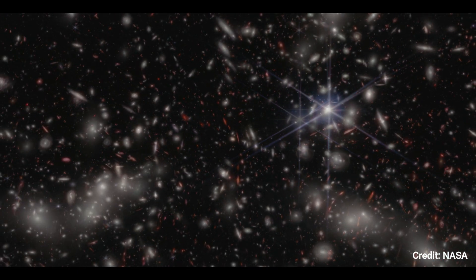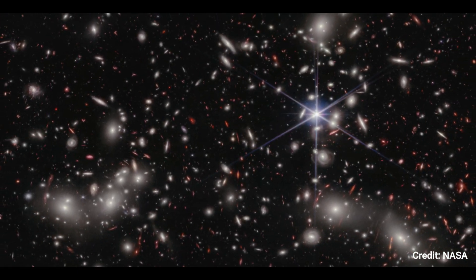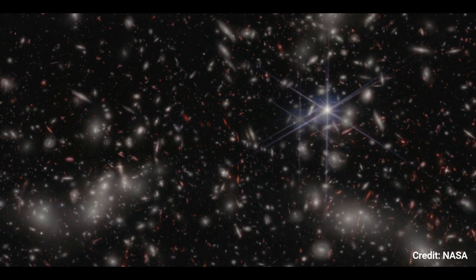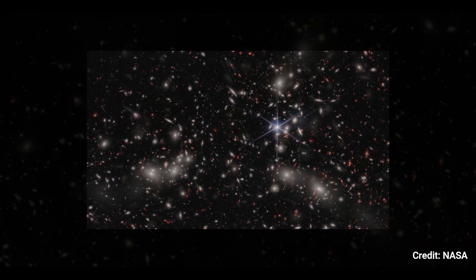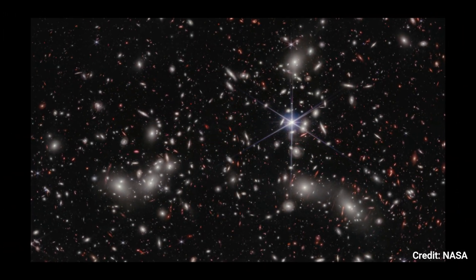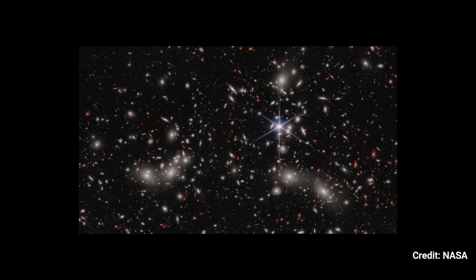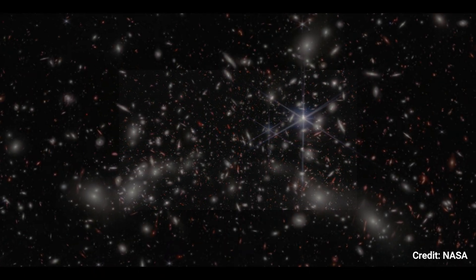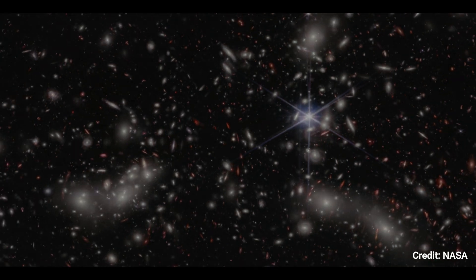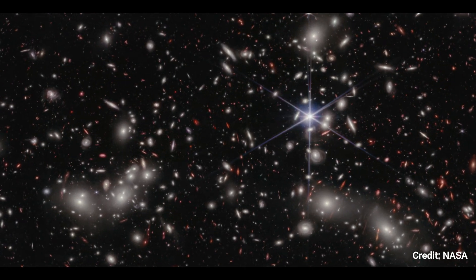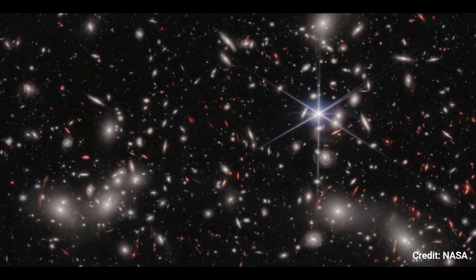To the right of the image center, a foreground star in our own galaxy shows Webb's unique diffraction spikes. The galaxies of Pandora's Cluster, a conglomeration of already-massive clusters of galaxies merging to form a megacluster, are bright white objects surrounded by a hazy glow. The concentration of mass is so great that gravity warps the fabric of space-time, creating an effect that astronomers are particularly interested in, a natural super-magnifying glass called a gravitational lens.